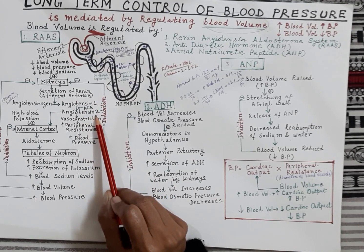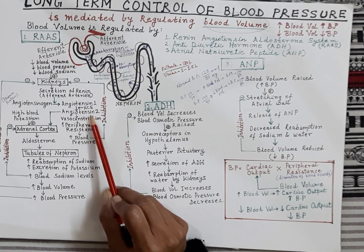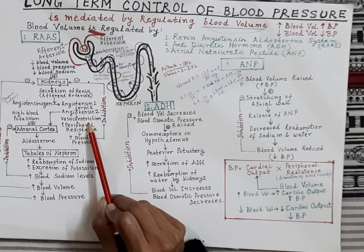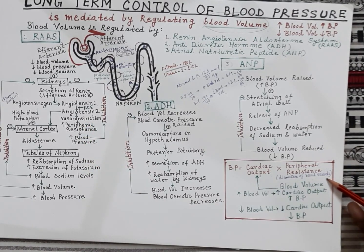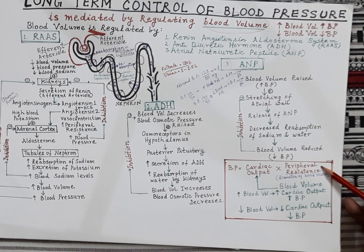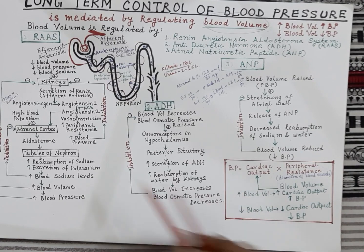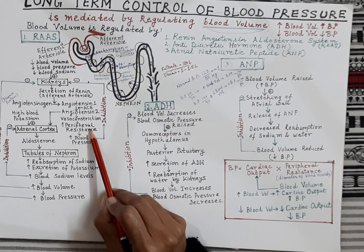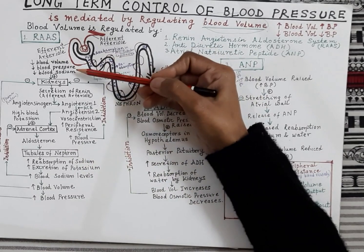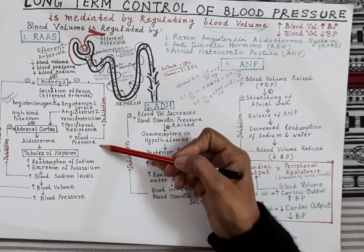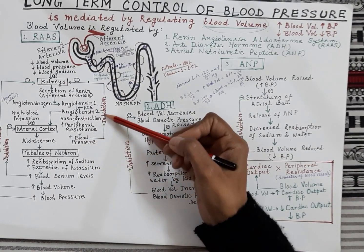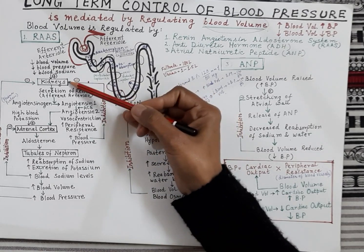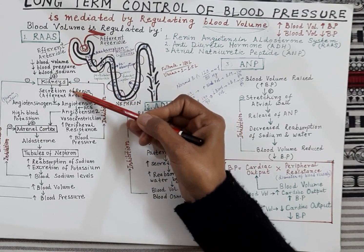Angiotensin 2 is very important. On one side, it causes vasoconstriction — blood vessels sukar jati hai — there is increase in the peripheral resistance and the blood pressure rises. So blood pressure, which was less, increases and comes back to normal. When blood pressure normalizes, the negative feedback inhibition sends a signal to the kidneys, and the kidneys suppress the production of renin.